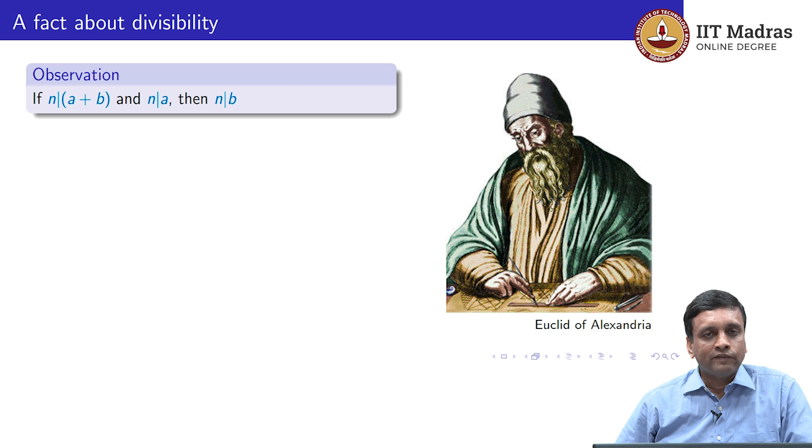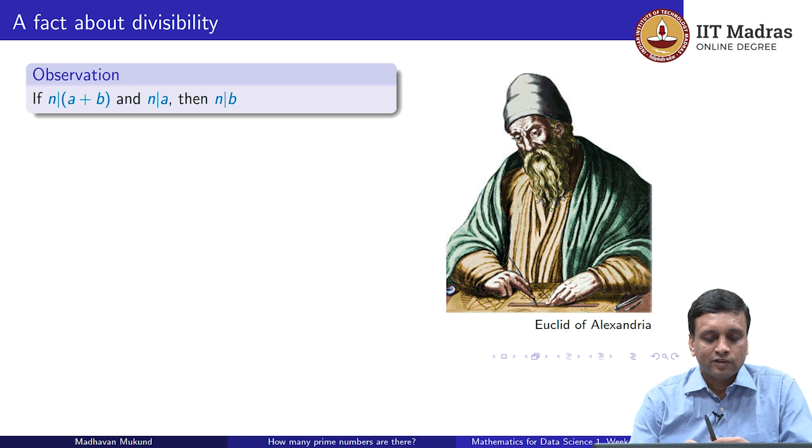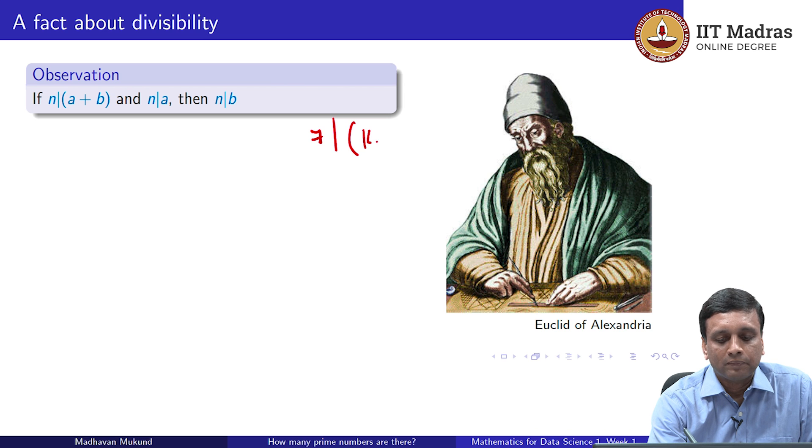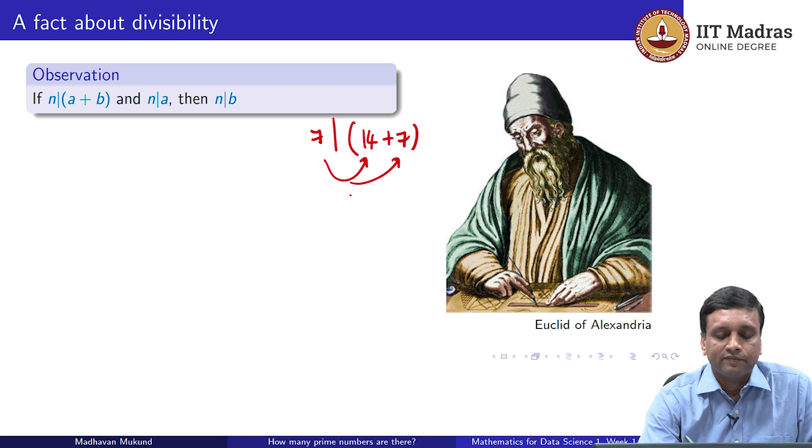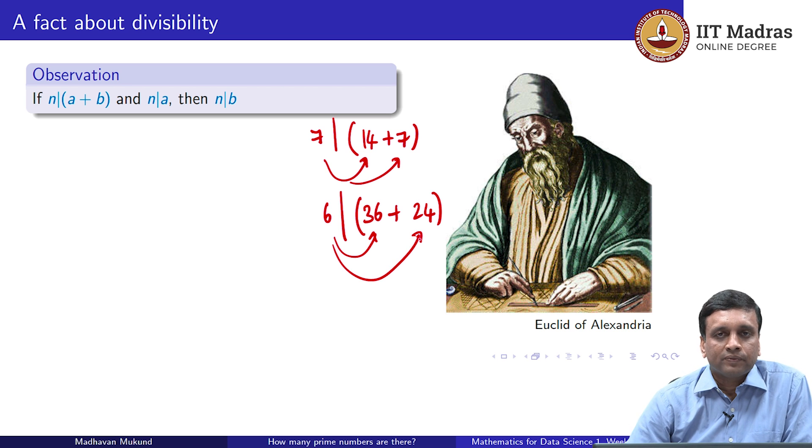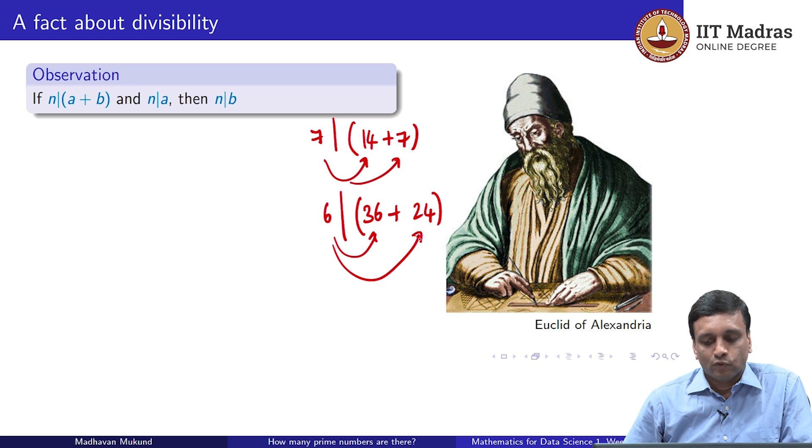This says that if a number divides a plus b, and it also divides a, then it must divide b. Let us look at an example. Supposing you say that 17 divides 21, and I write 21 as 14 plus 7. Then 17 also divides 14, and therefore, it also divides 7. Similarly, if I say 6 divides 36 plus 24, which is 60, then since 6 divides 36, it must also divide 24. This is not very difficult to prove. Let us prove it just to get a feel of how such proofs go.